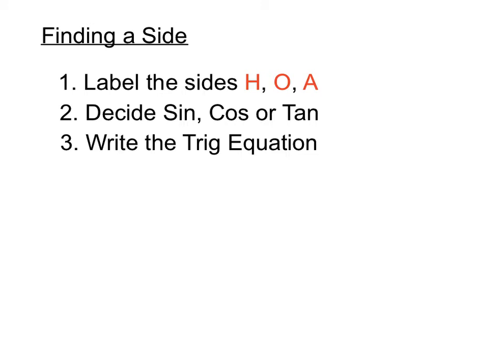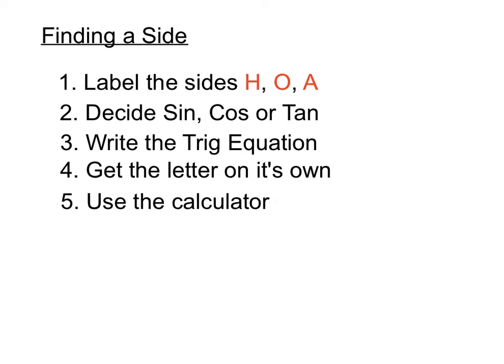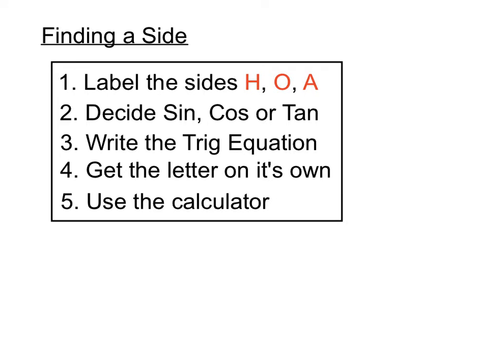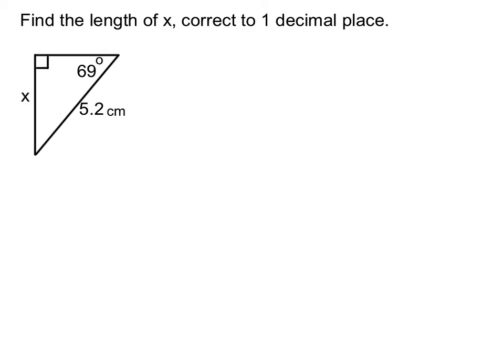Then we'll write the trig equation out for either sine, cos or tan when we decide. Then we'll make a move to get the letter on its own. And then we'll use the calculator to round off our answer. There are our steps — let's have a look at our first example.